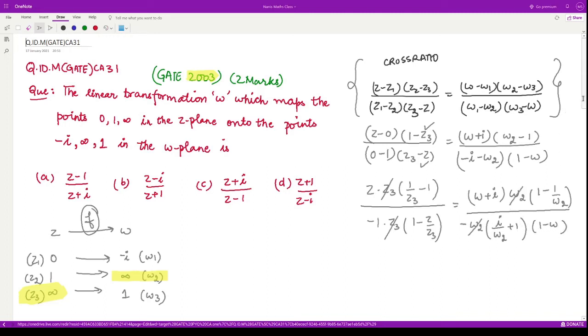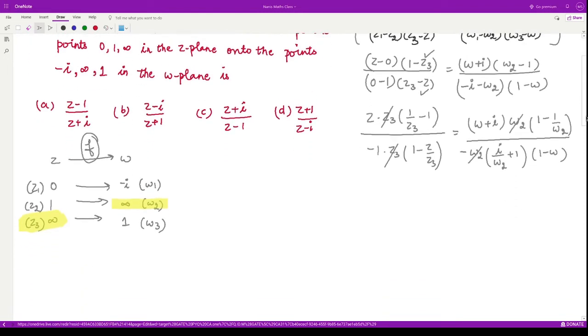From here w2 and w2 cancel. Now we can substitute the values of z3 and w2 as they go to infinity. That means 1/z3 would go to 0 and 1/w2 would also go to 0. We are left with z times 0 minus 1, then -1 times 1 minus 0. On the right-hand side it would be w + i, then 1 - 0, then -1, and 1 - w.